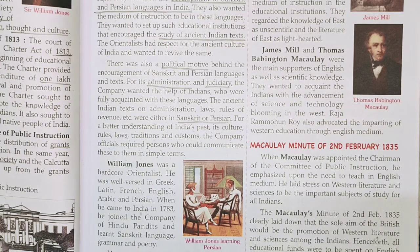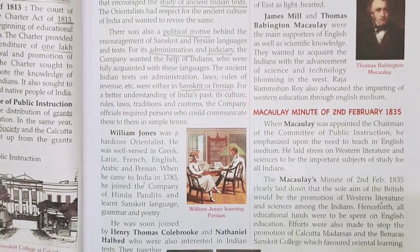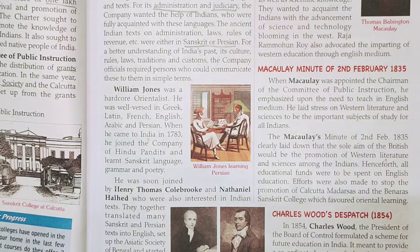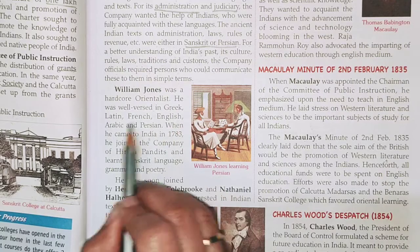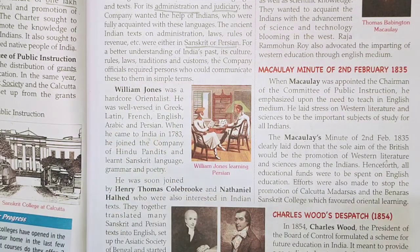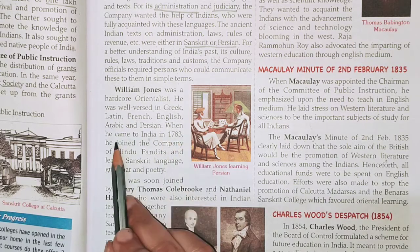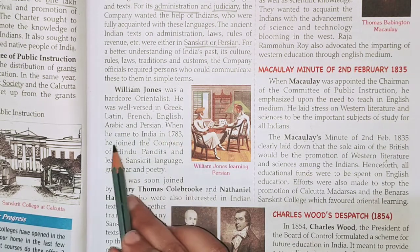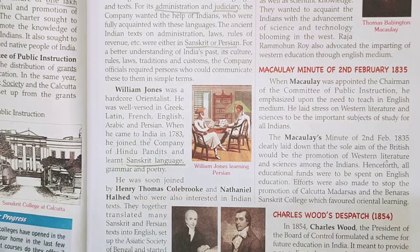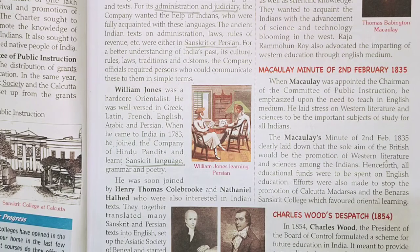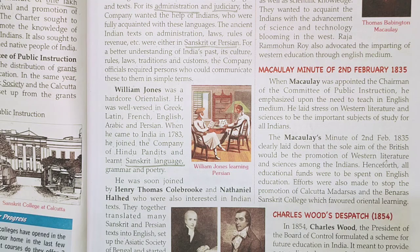One example of an Orientalist is William Jones — a hardcore Orientalist who was well-versed in Greek, Latin, French, English, Arabic and Persian. When he came to India in 1783, he joined a company of Hindu pundits and learned Sanskrit. He wanted Asian languages and Asian culture to be promoted, so he began learning Sanskrit language, grammar and poetry.